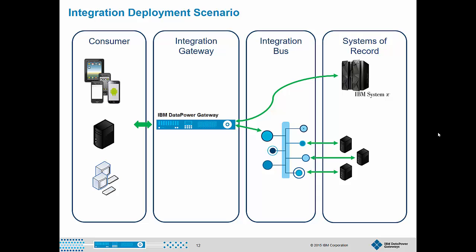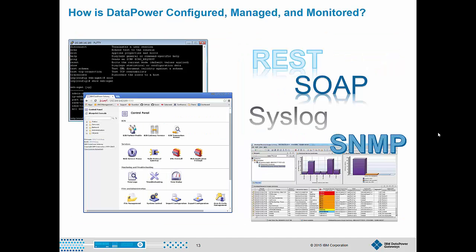For example, DataPower can be used as an SSL termination point, decrypt inbound content, verify digital signatures, transform messages from XML or JSON into COBOL copybook, then hand the message to the ESB.